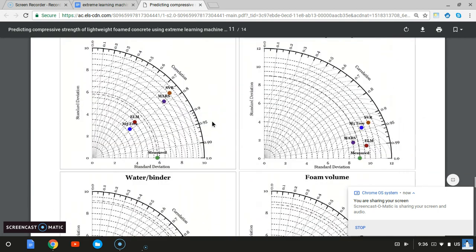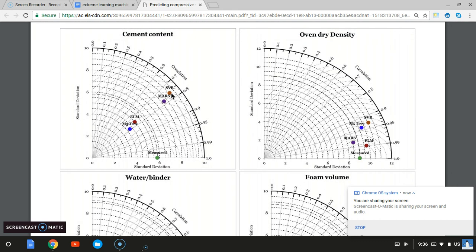We can see that correlation coefficient is best in this particular case for M5 tree. But ELM has the closest variance between the points. If you look at the variance between the measured five points, which is the five testing points, it's this line, and you can see that ELM is closest to it.